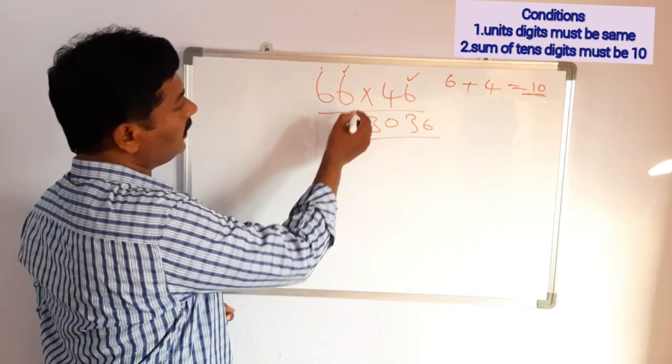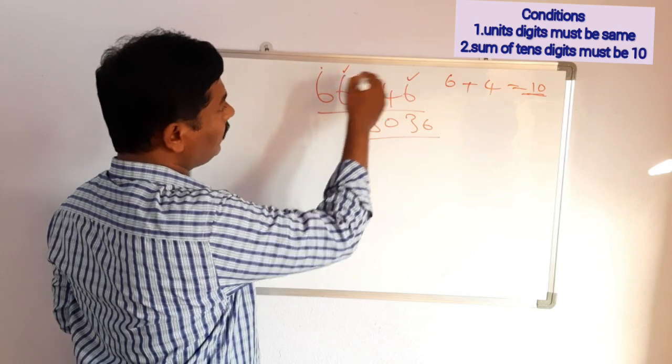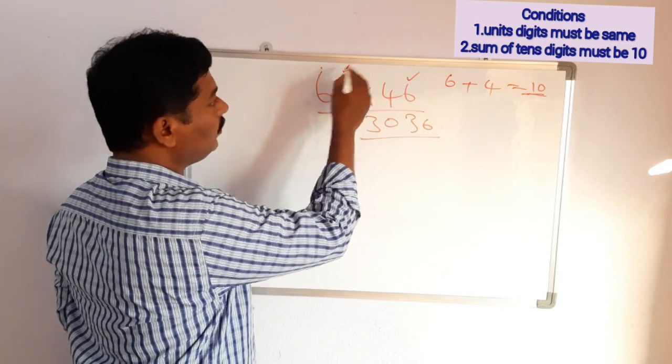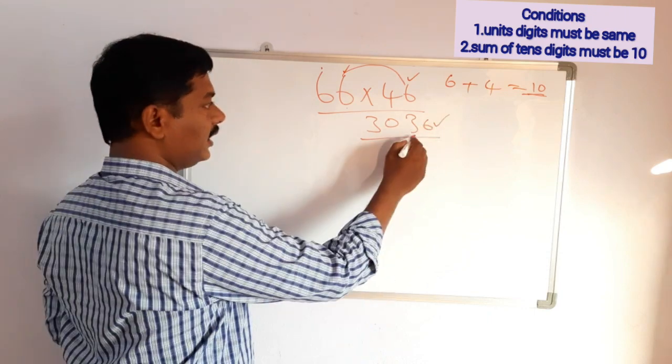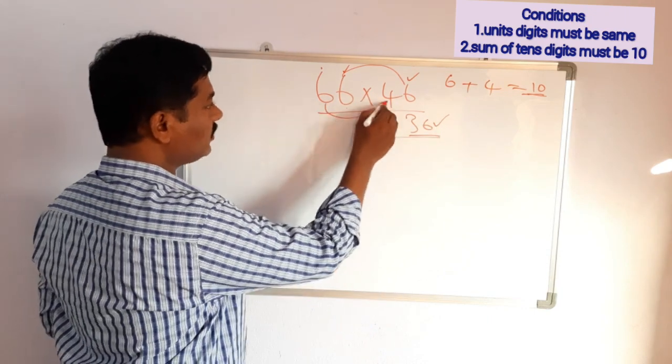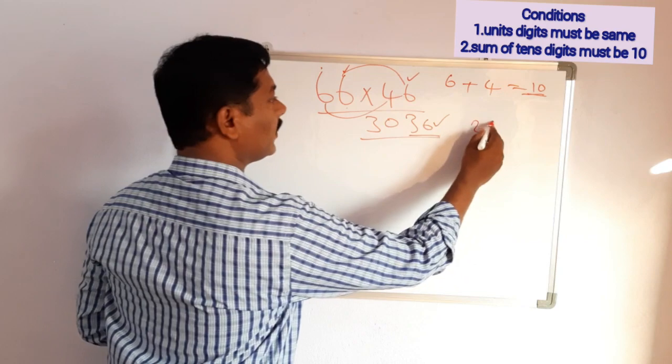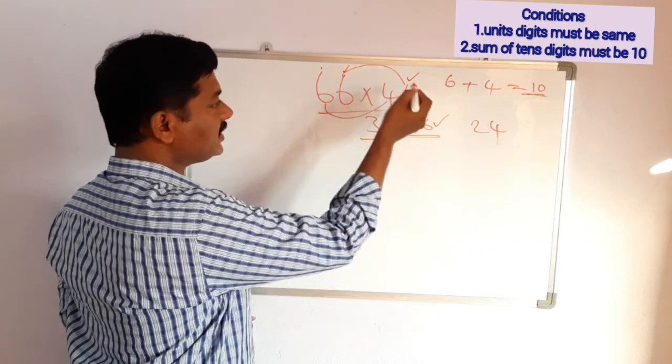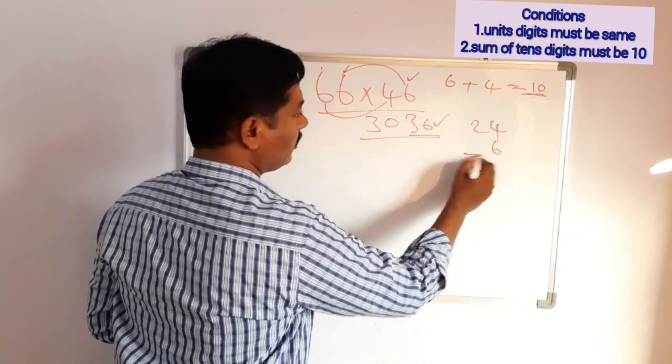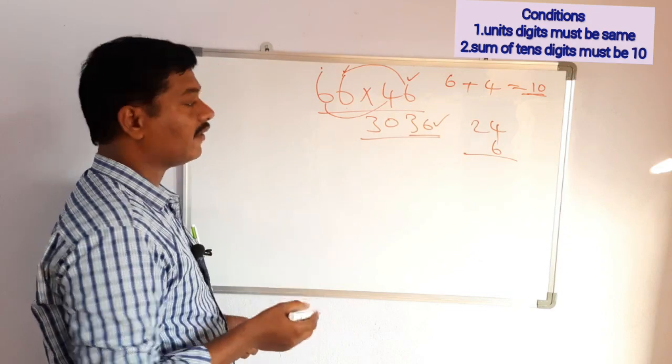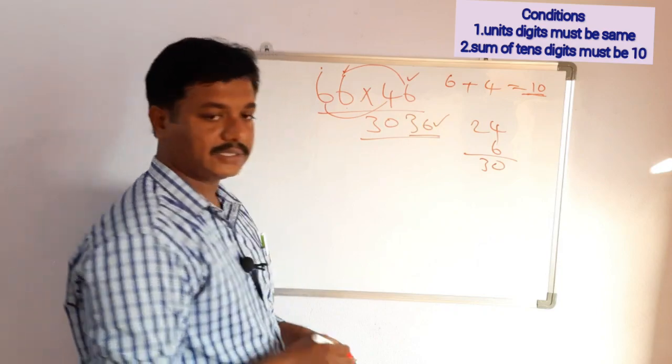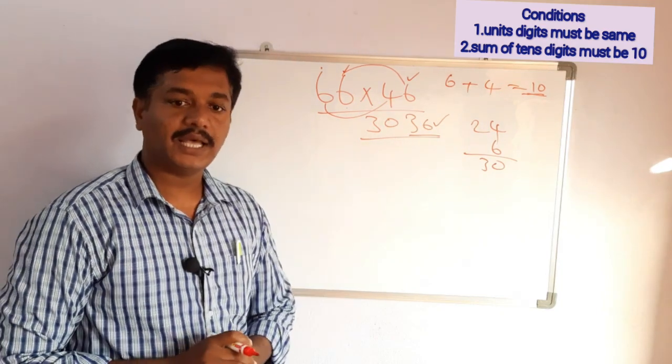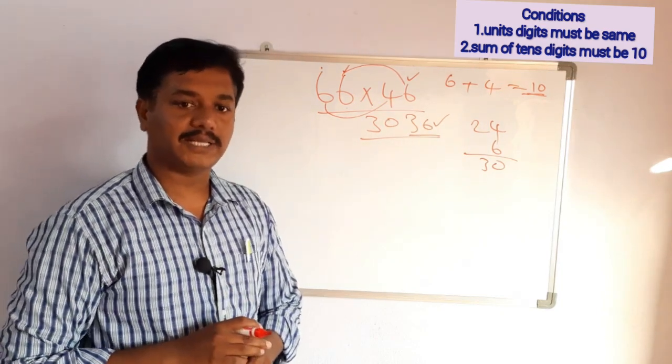First, we multiply the units places. 6 times 6 is 36, we should write here. Next, 6 times 4 is 24. Next, we add the units digit. 24 plus 6 equals 30. So 30 and 36. 3036 is the answer. Let me see another example.